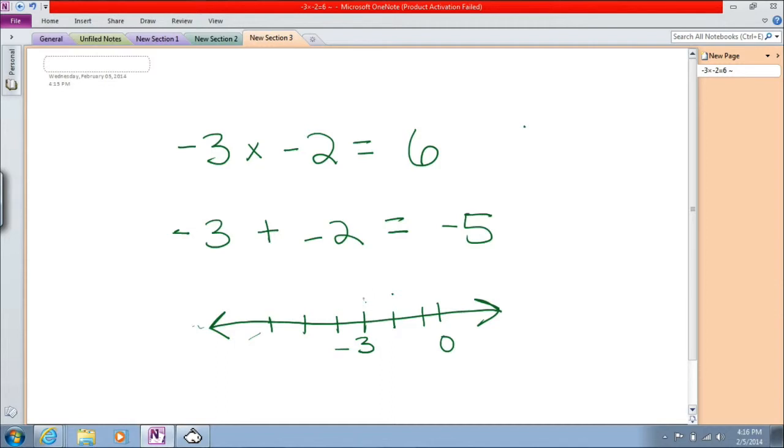If I'm starting at negative three and then I'm adding a negative number, I'm going in the same direction as before. So I move two spaces to the left, and I'm at negative five.